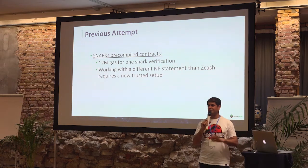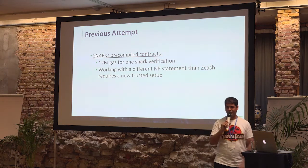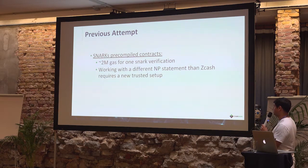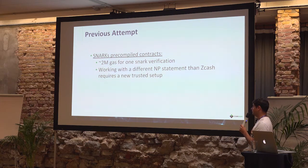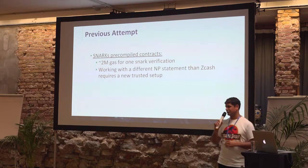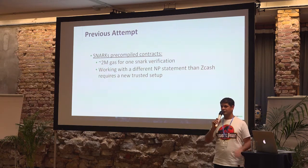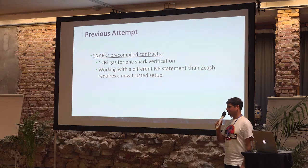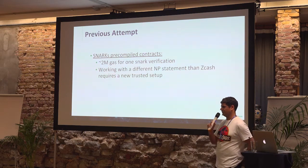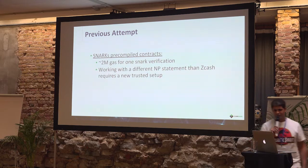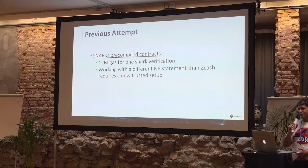One important question: how many of you know the basics of how Zcash or Z-cash works? I'll give a brief background. There was already one previous attempt to implement shielded transactions, which included implementing some pre-compiled contracts for SNARKs. They weren't implemented in a way that you can run in one contract to verify SNARKs, but there were more native operations — basically elliptic curve operations done as pre-compiled contracts. They got to a number of two million gas for one SNARK to be verified.